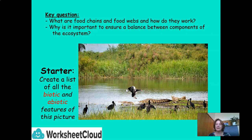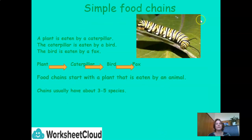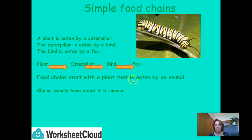Remember, the living and non-living factors rely on each other in order to survive. Let's take a look at a simple food chain. A plant is eaten by a caterpillar. The caterpillar is eaten by a bird, and the bird is in turn eaten by a fox. Food chains always start with a plant that is eaten by an animal.